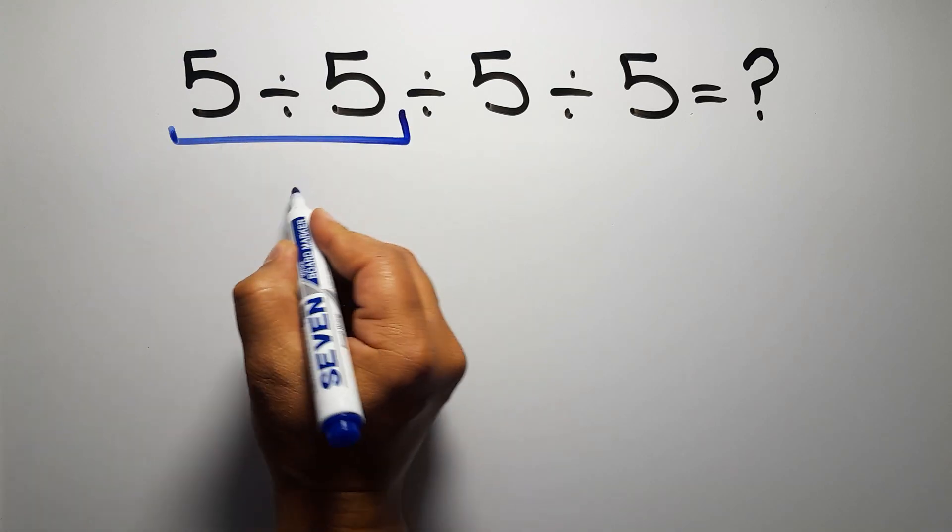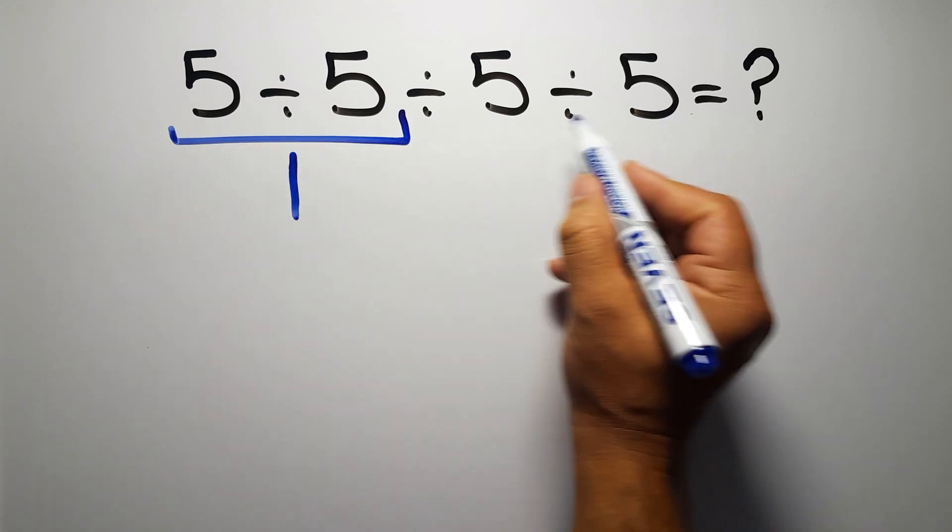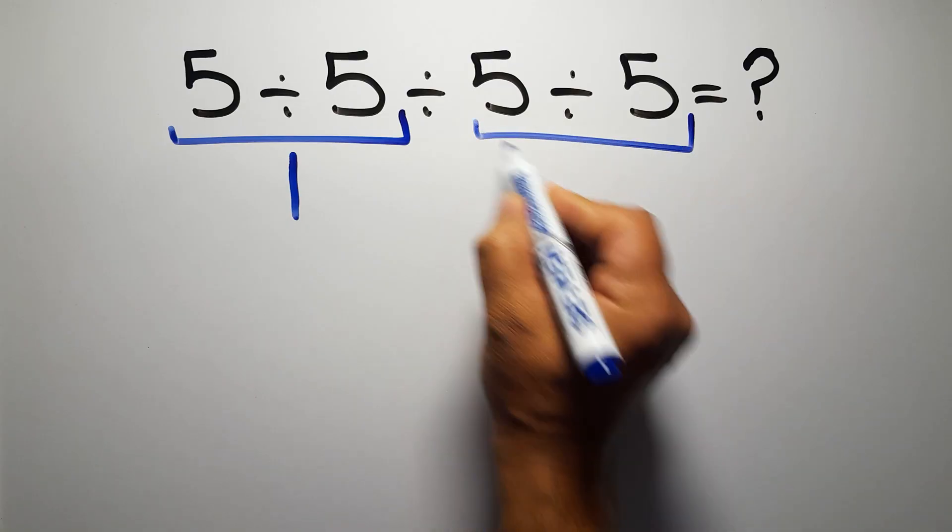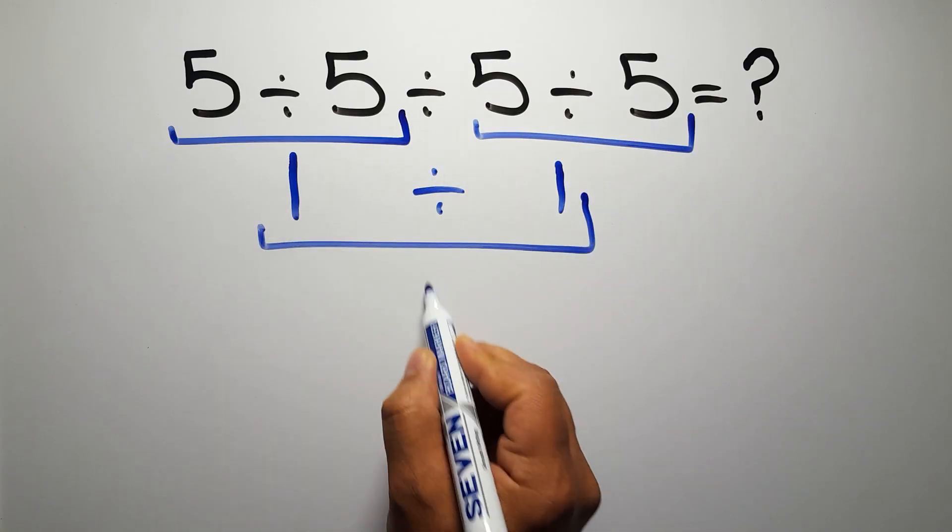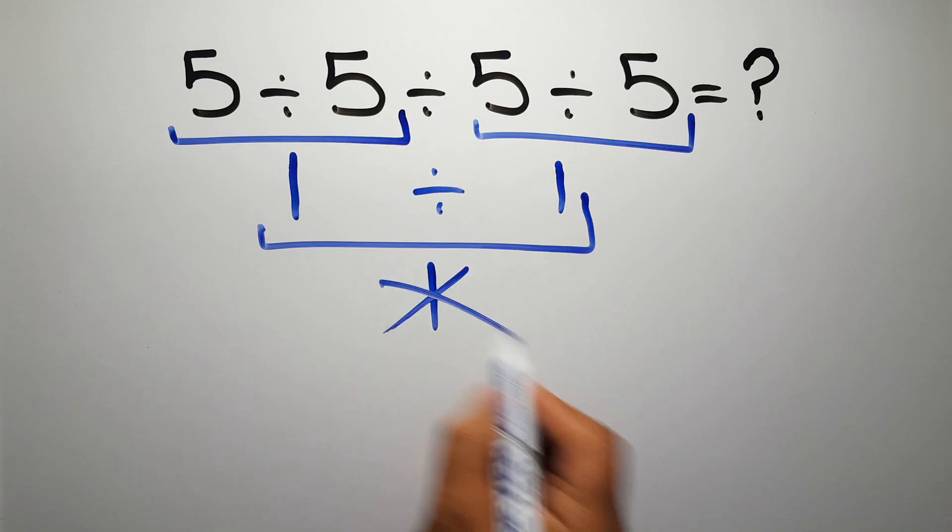5 divided by 5 gives us 1, and again here we have 5 divided by 5, so 1 divided by 1 is just 1. But this answer is not correct.